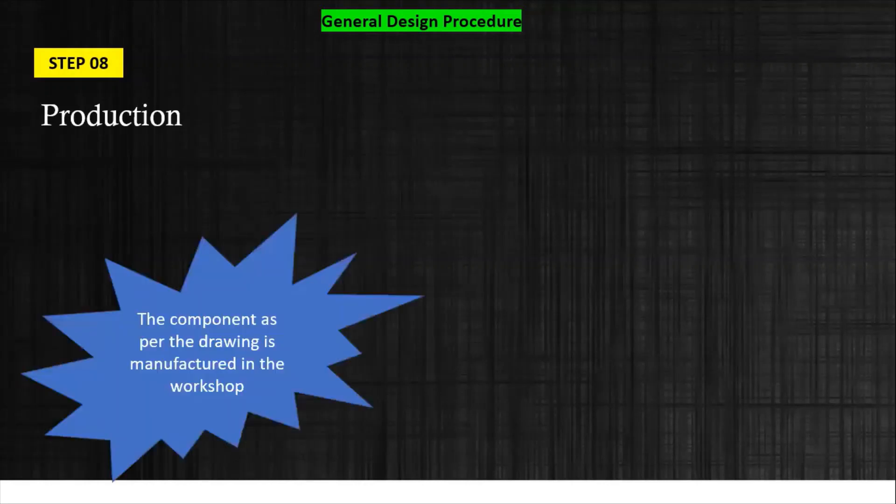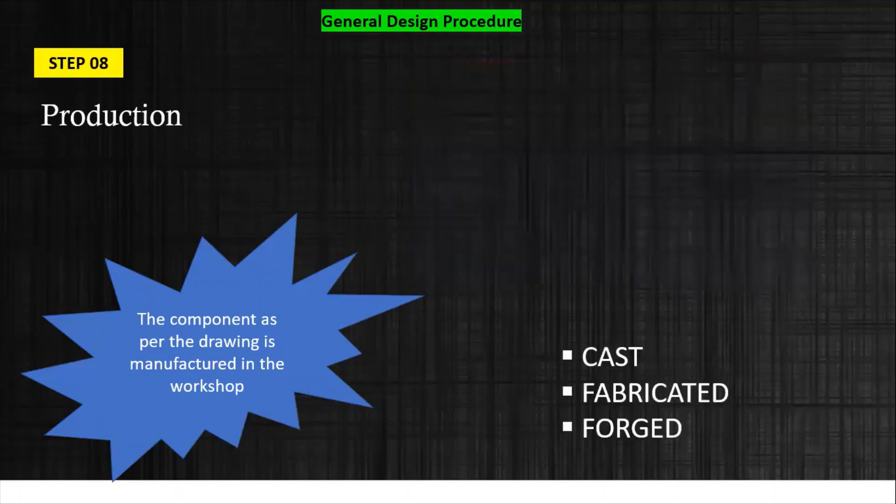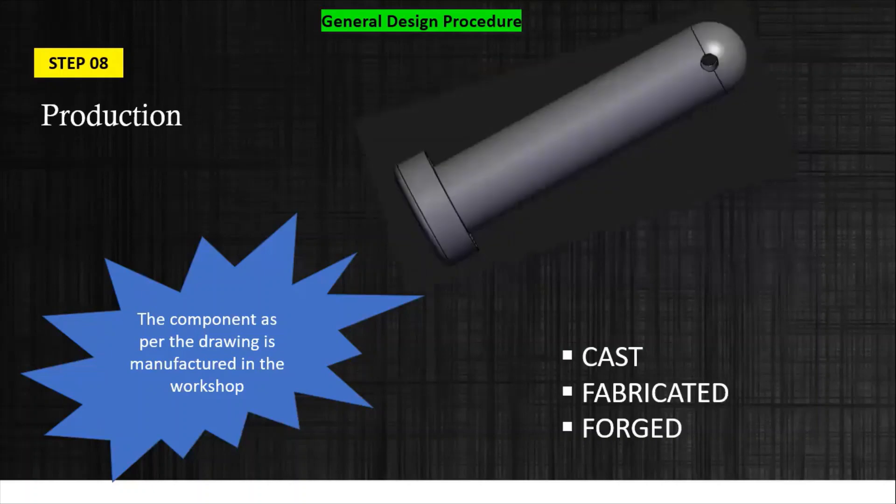Then step eight is the production, which will be the last step. This drawing will be sent to the manufacturing department. Then what happens? The production engineer will observe this drawing and according to the drawing he will decide which type of process: whether to go for cast, whether to go for fabricated, or go for forging. If I have taken the pin example, you can go for the machine and start producing the component. Finally, we got the pin in this case.